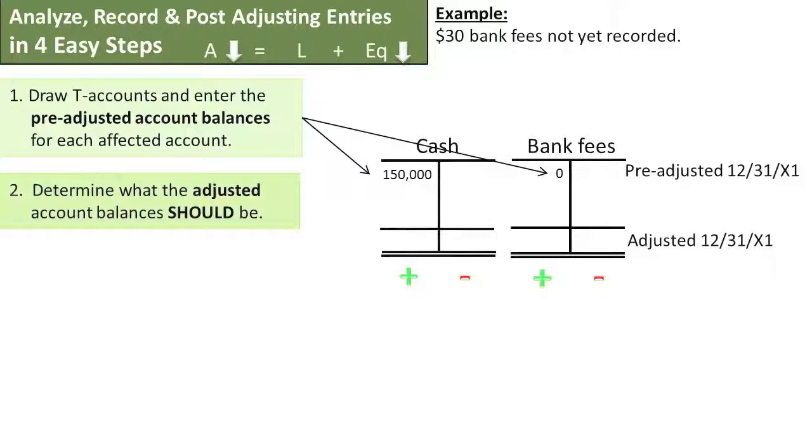Step 2. Determine what the adjusted account balances should be. In other words, after paying $30 in bank fees, how much cash would you have left and what would your bank fees for the year be, assuming you started with having no bank fees?